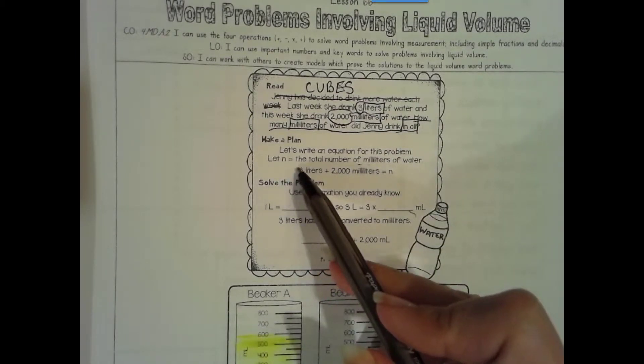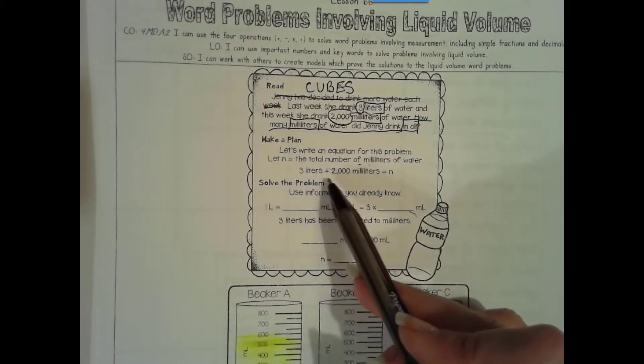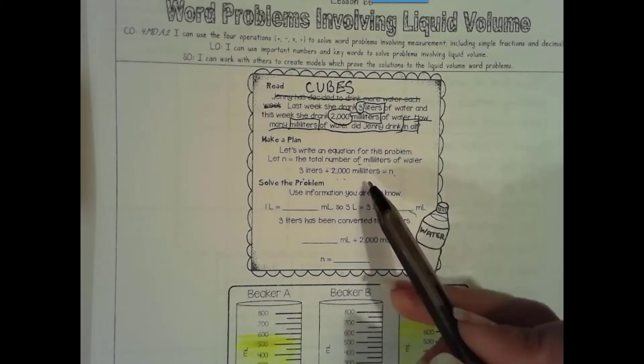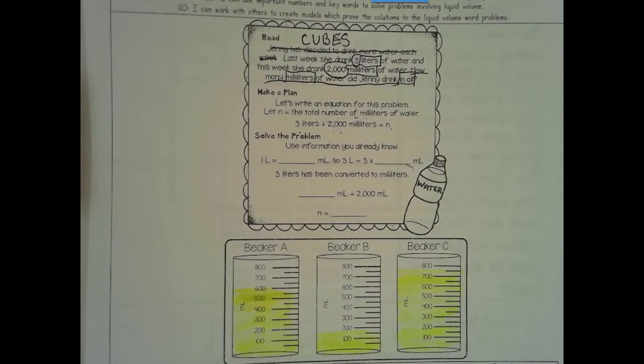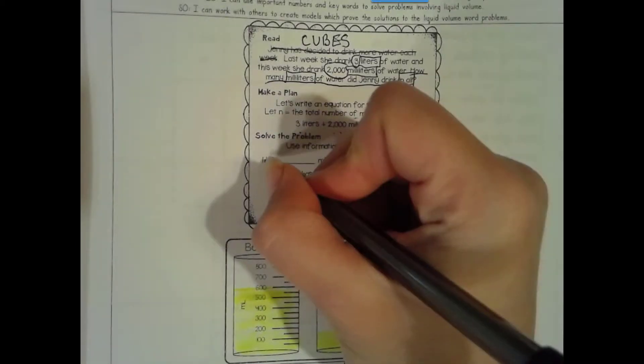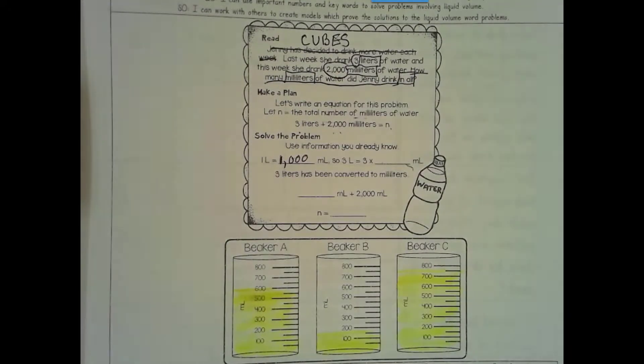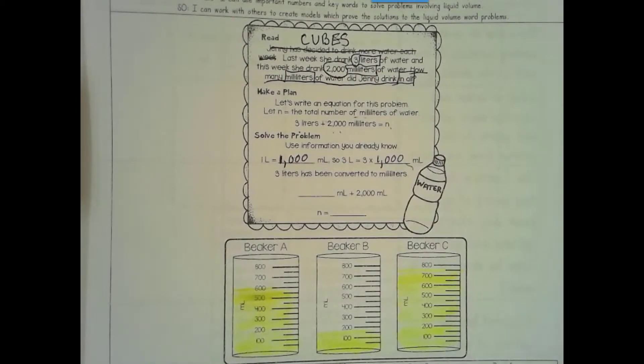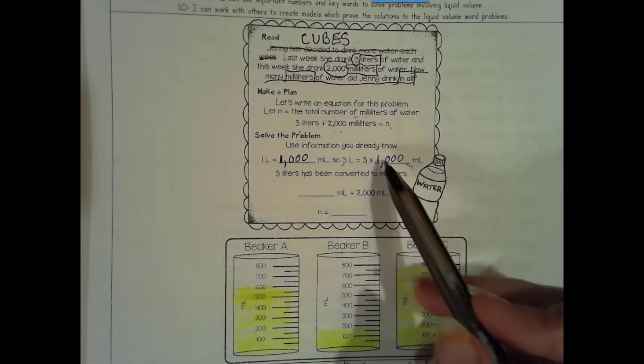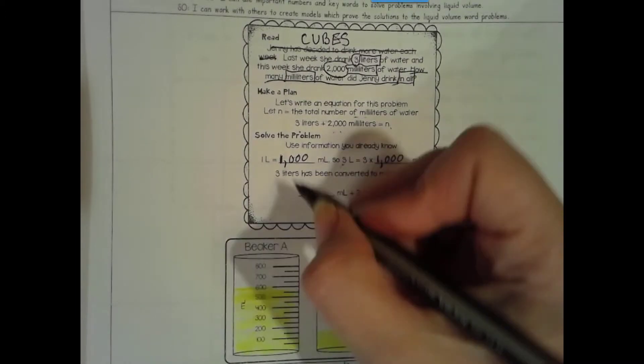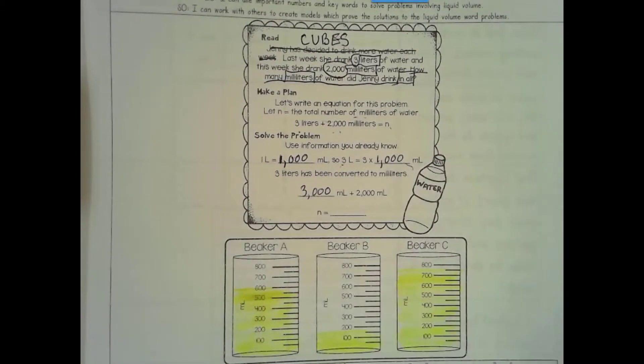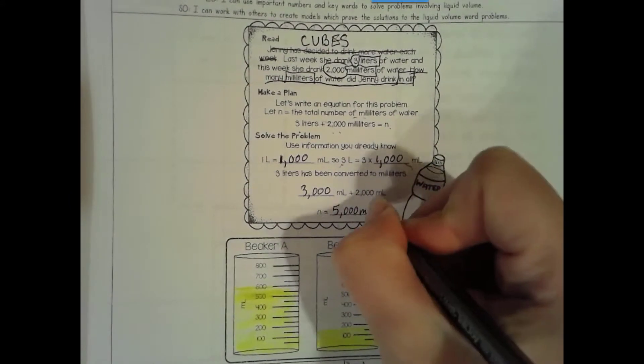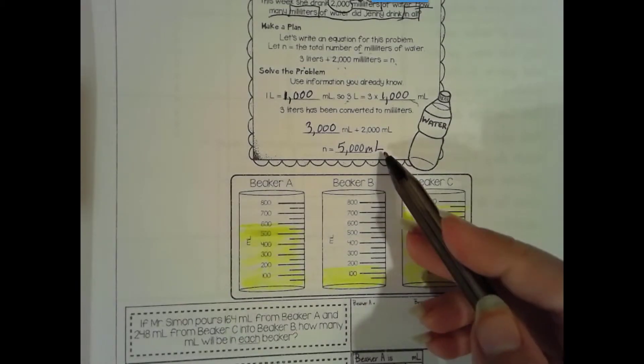So read, Jenny has decided to drink more water each week. Last week she drank 3 liters of water. And this week she drank 2,000 milliliters of water. How many milliliters of water did Jenny drink in all? So we're looking for milliliters. In all is a total.